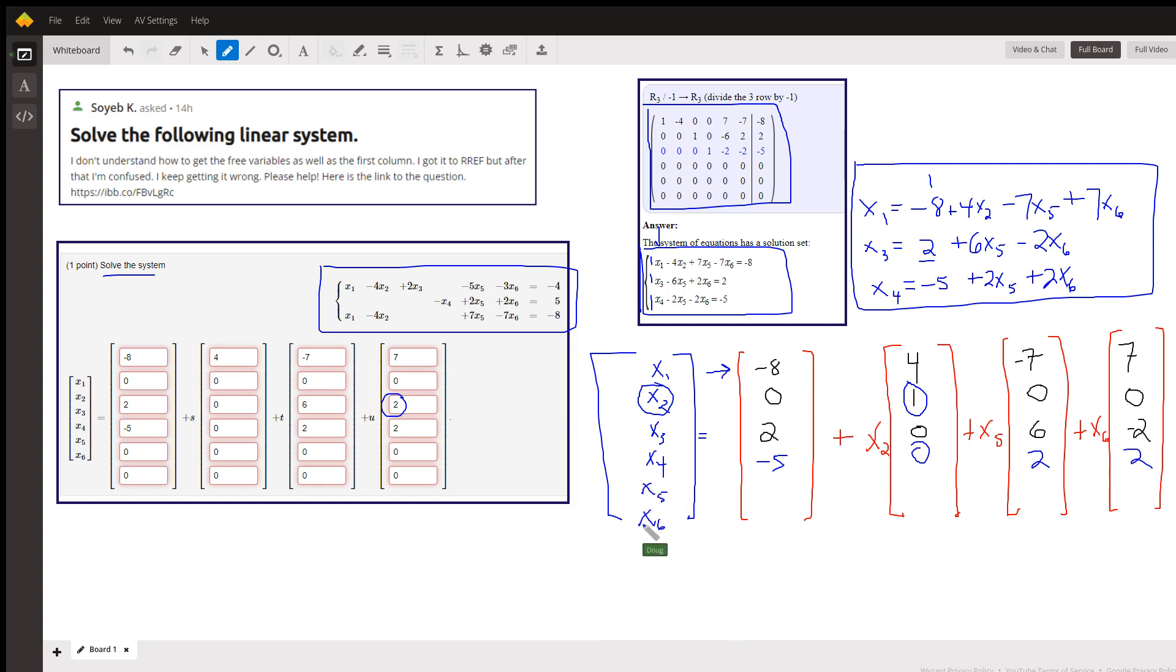And x sub 5 and x sub 6 are free variables, so we're going to put zeros everywhere except where that multiplication is taking place. So we get a 1 here, 0, 0, 1, 0. And for x sub 6: 0, 0, 0, 1.